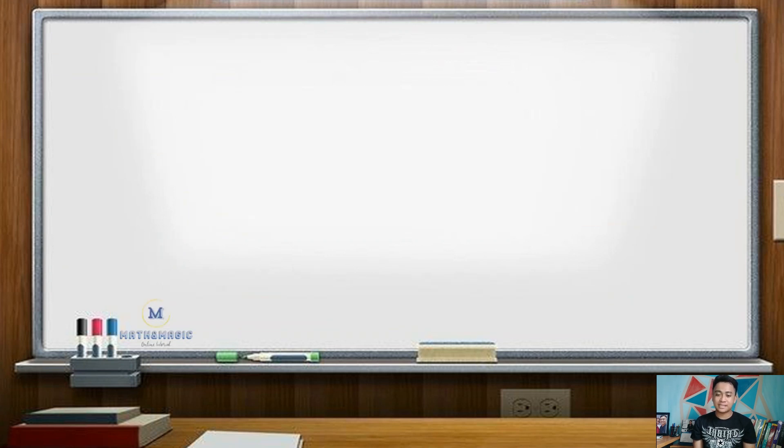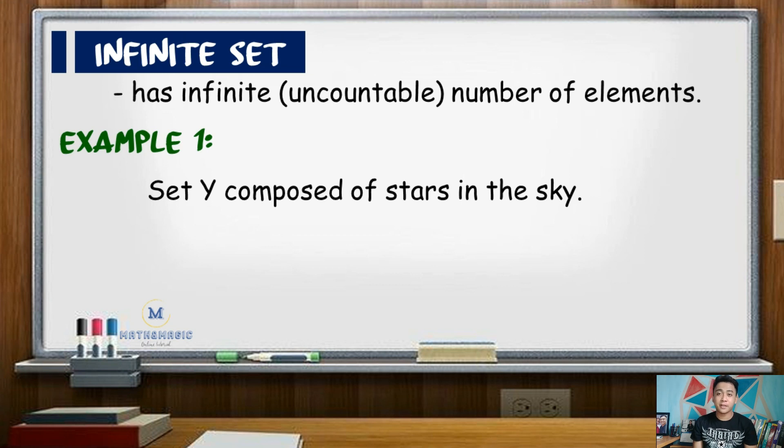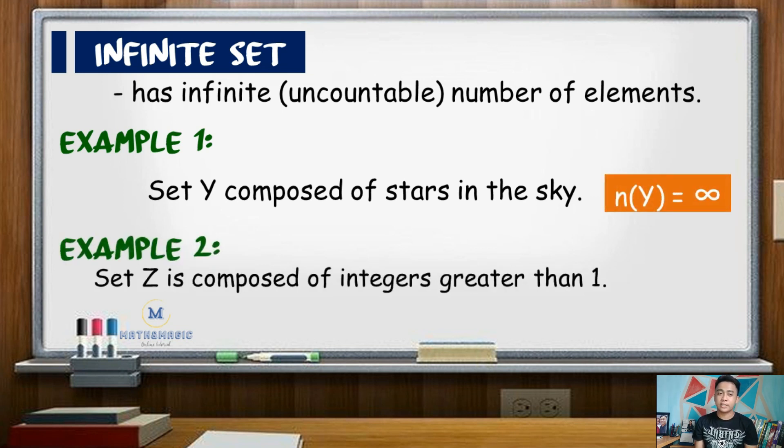Conversely, for infinite sets, examples are set Y, which is a set of stars in the sky. Remember that we cannot count the number of stars in the sky since those are too many. Another infinite set is the set of integers greater than 1. So, we know that it could extend up to positive infinity. As a hint, when you see three consecutive dots, that is ellipses, and read as, and so on and so forth, more likely, the set is said to be infinite.